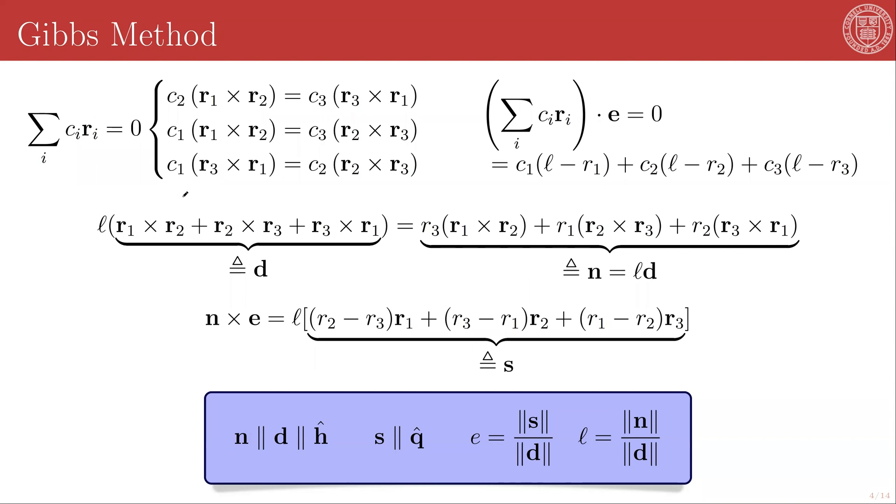For that, we need Gibbs method. So Gibbs method is now treating a case where we have three fully evaluated position vectors of our object with respect to the center of mass of whatever it is in orbit about at three different times. And those can either be measured directly or can be evaluated via Gauss's method or some variation of Gauss's method.